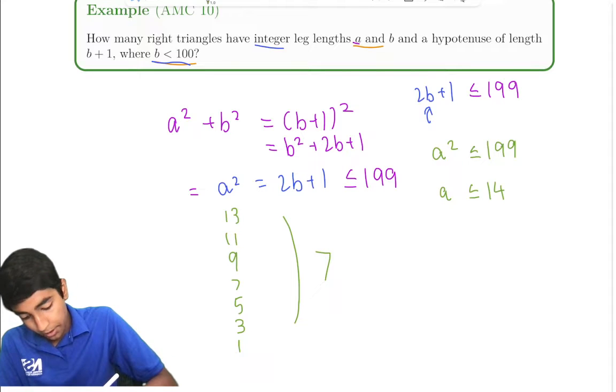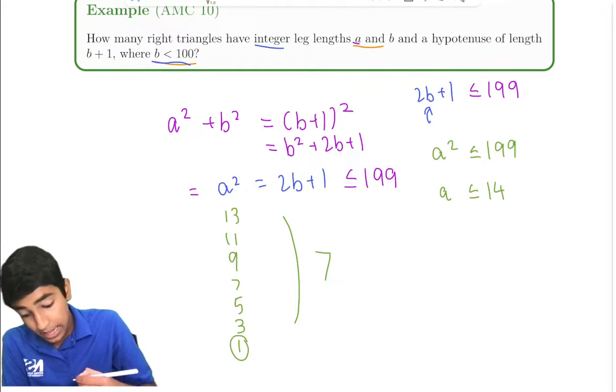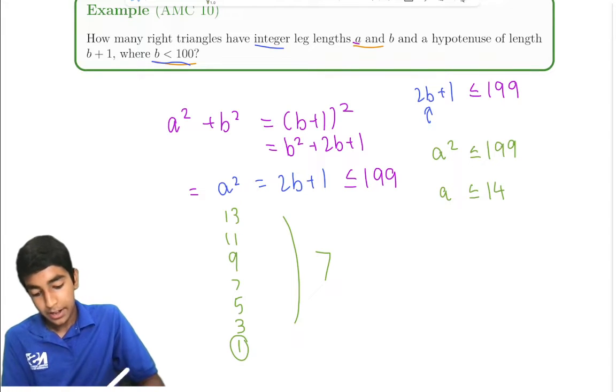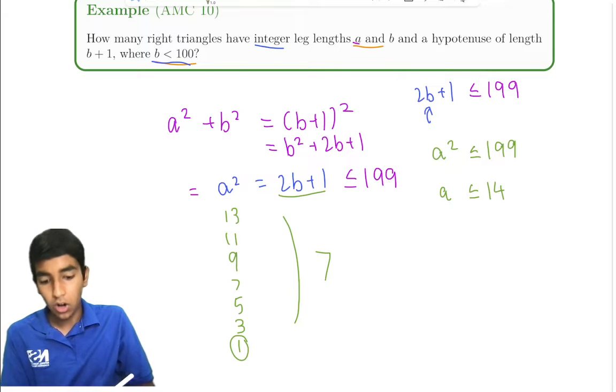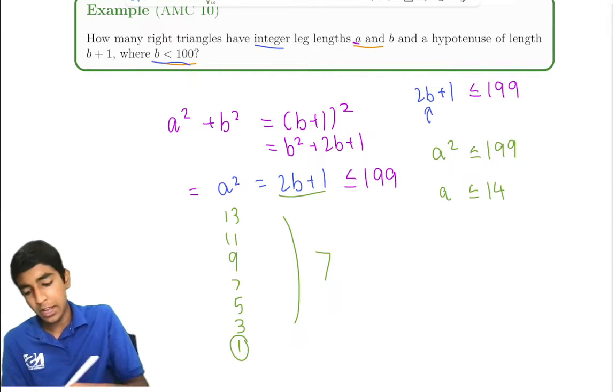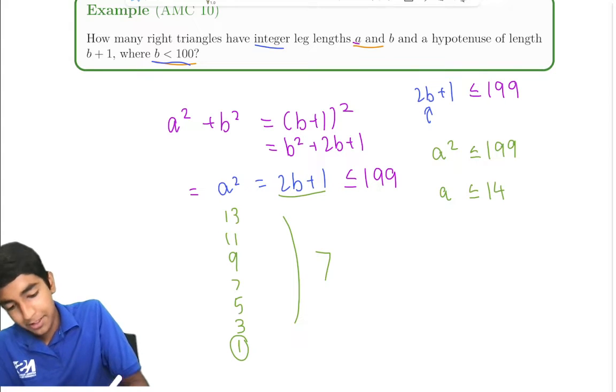But the key thing to see here is that when a² is 1, then 2b + 1 is equal to 1 as well, which means b is 0. Can a leg of a right triangle be 0? Well, that would be a sad right triangle, because it would be a line at that point.